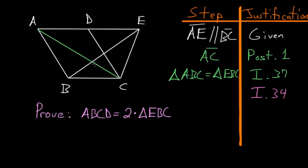Or in other words, the parallelogram is equal to twice the triangle. So let's write that the parallelogram ABCD is equal to twice the triangle ABC.